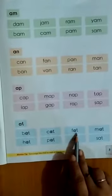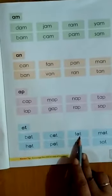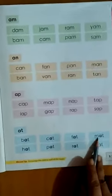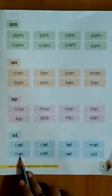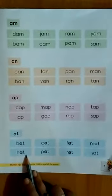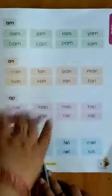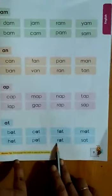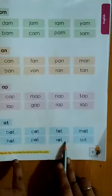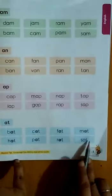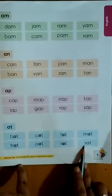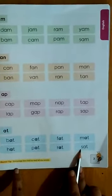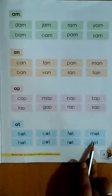F-at: fat. M-at: mat. H-at: hat. F-at: fat. R-at: rat. S-at: sat. I hope you all have understood.